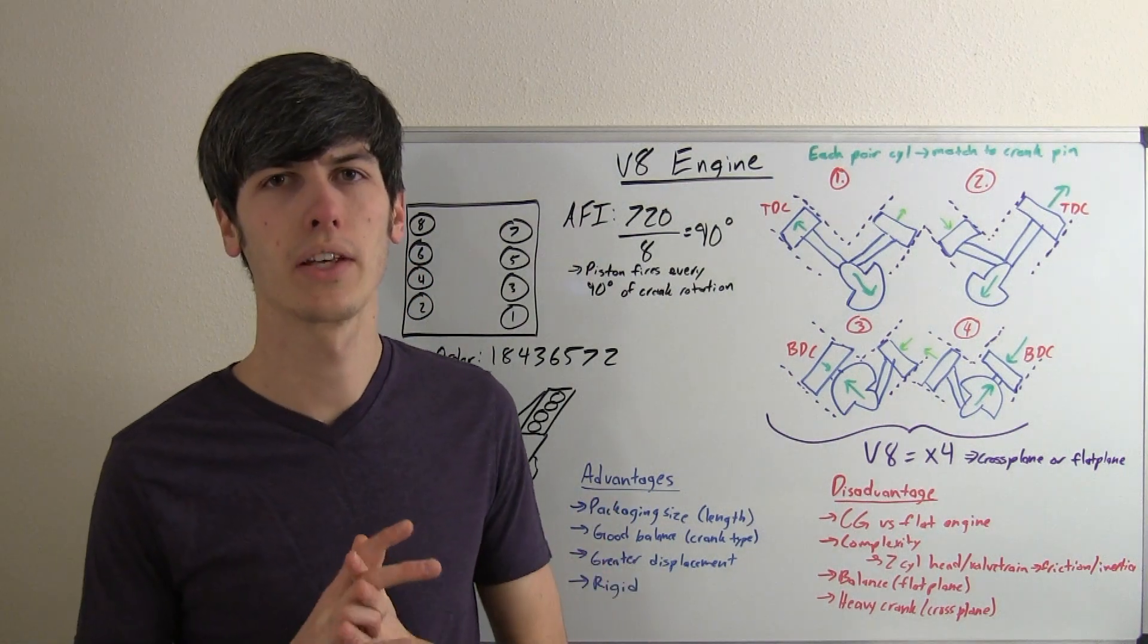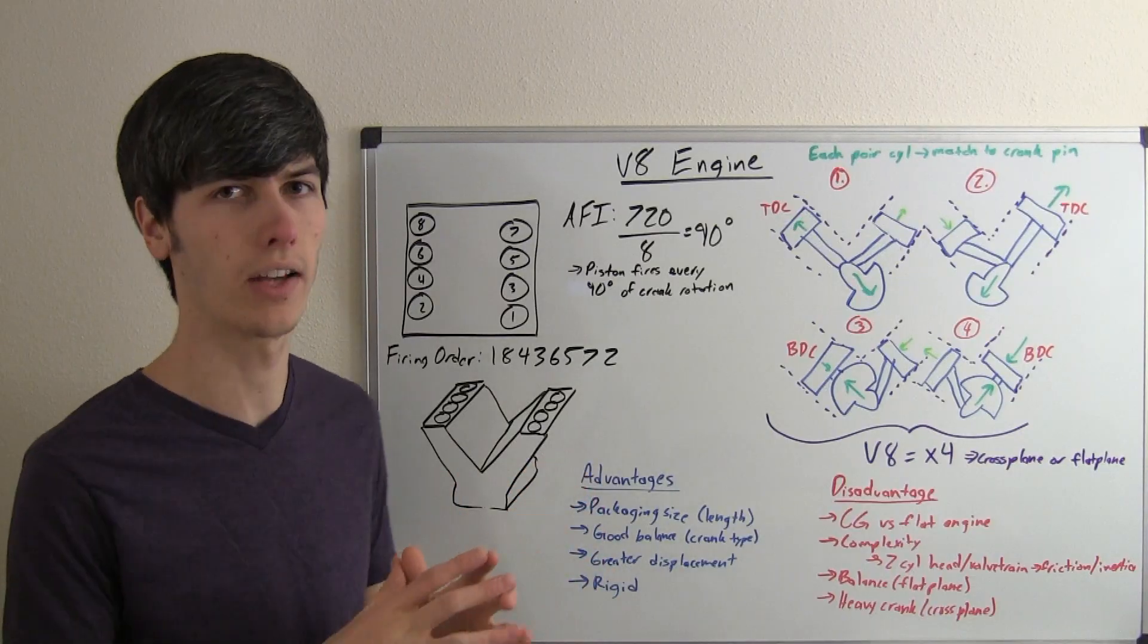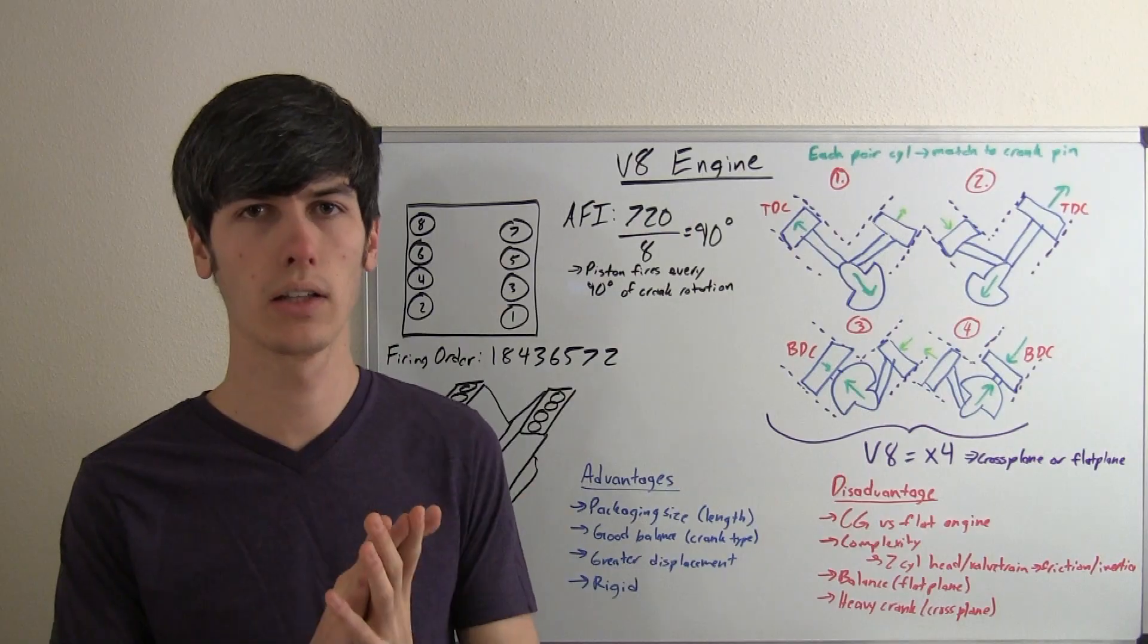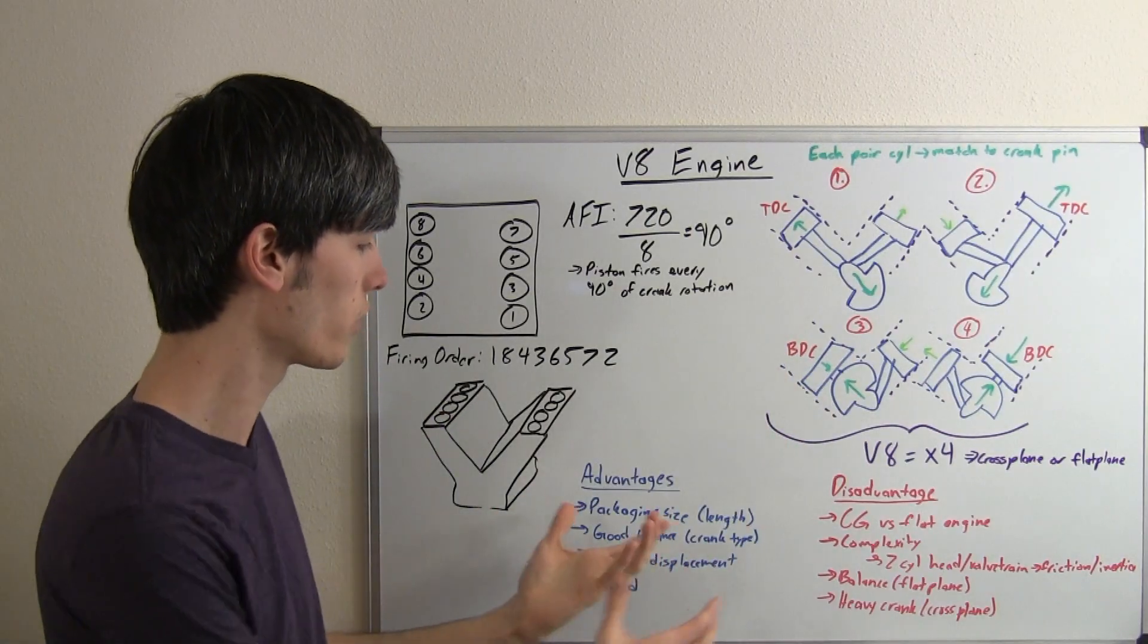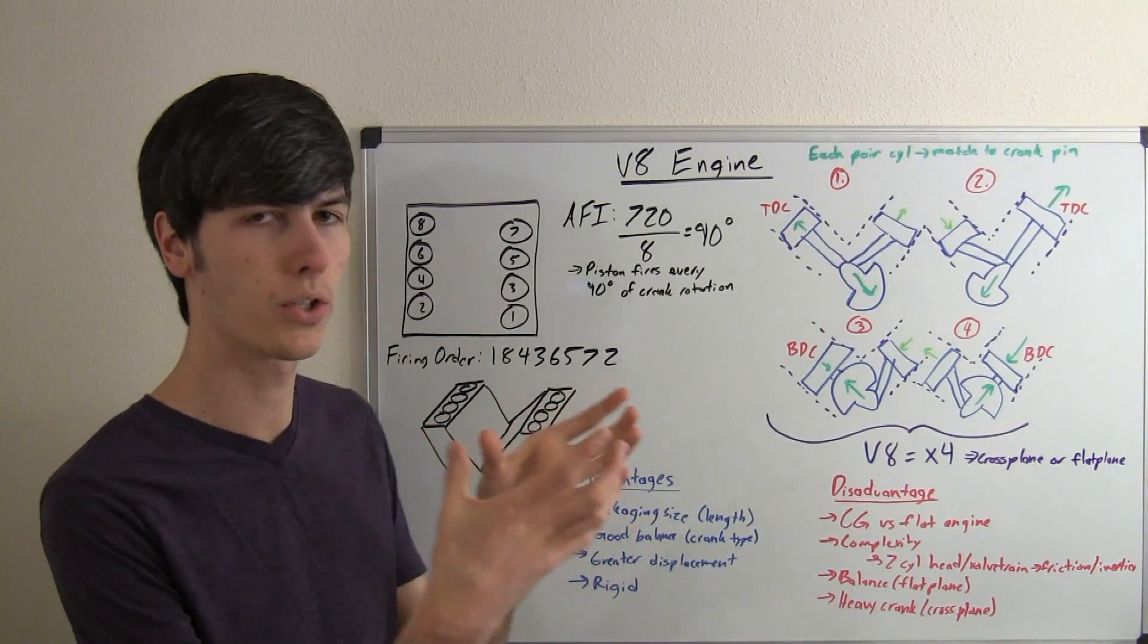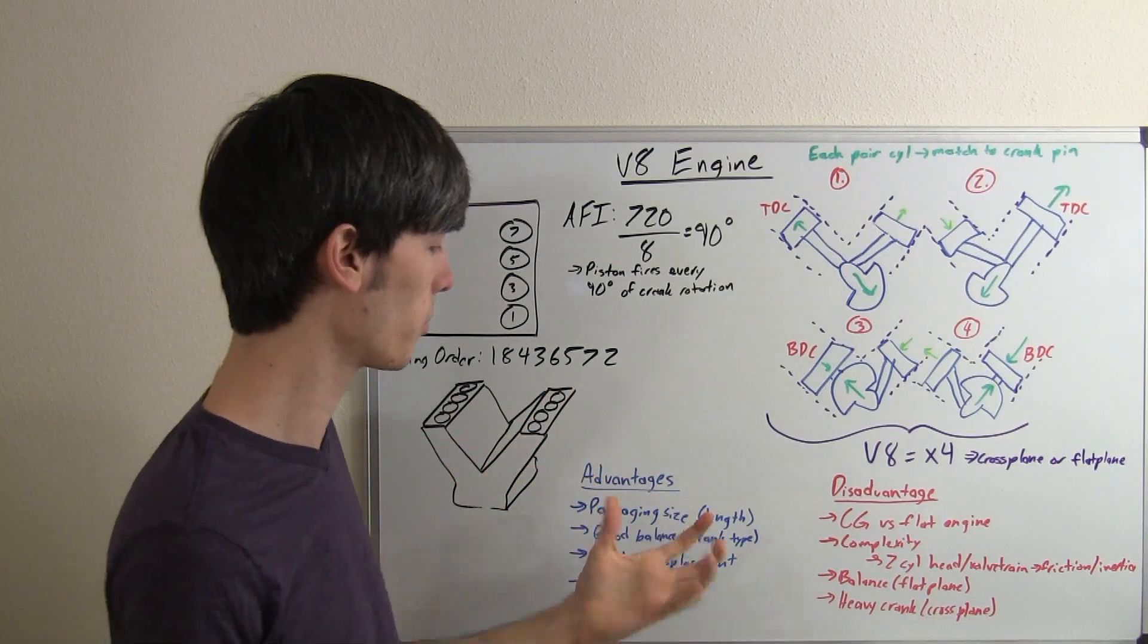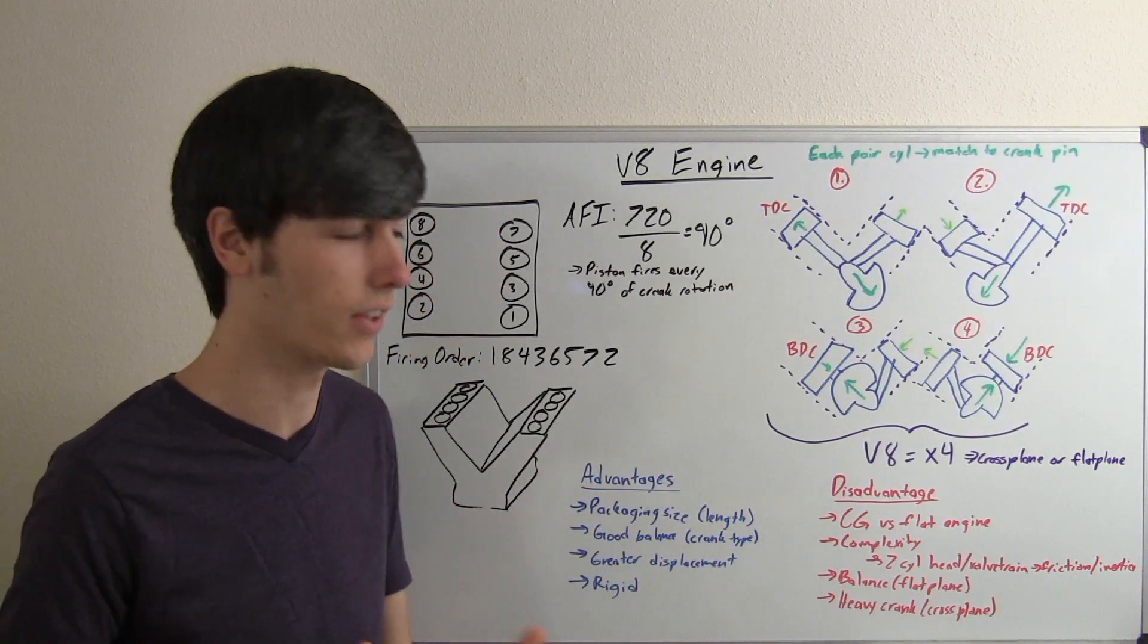So, let's talk about the advantages and disadvantages of a V8 engine. Well, one of the biggest advantages is the packaging size. If you were to think about an inline eight cylinder engine, it'd be extraordinarily long and it'd be kind of fairly unrigid. And so, the packaging size of this V8, when you match all eight cylinders to this smaller, more compact crankshaft, it's a much more compact size. And that's a great thing for fitting it inside of a car.